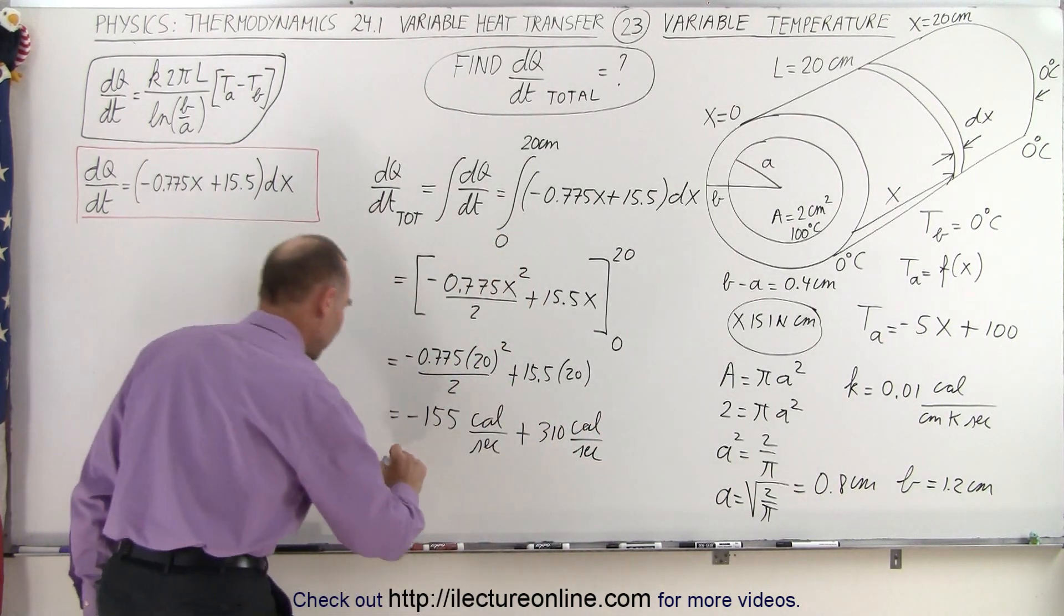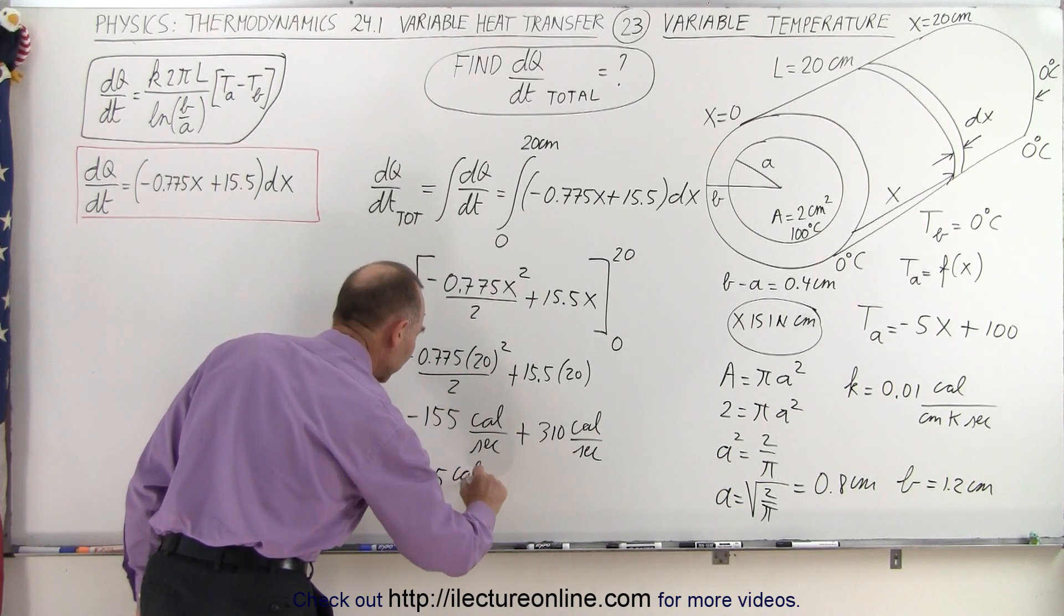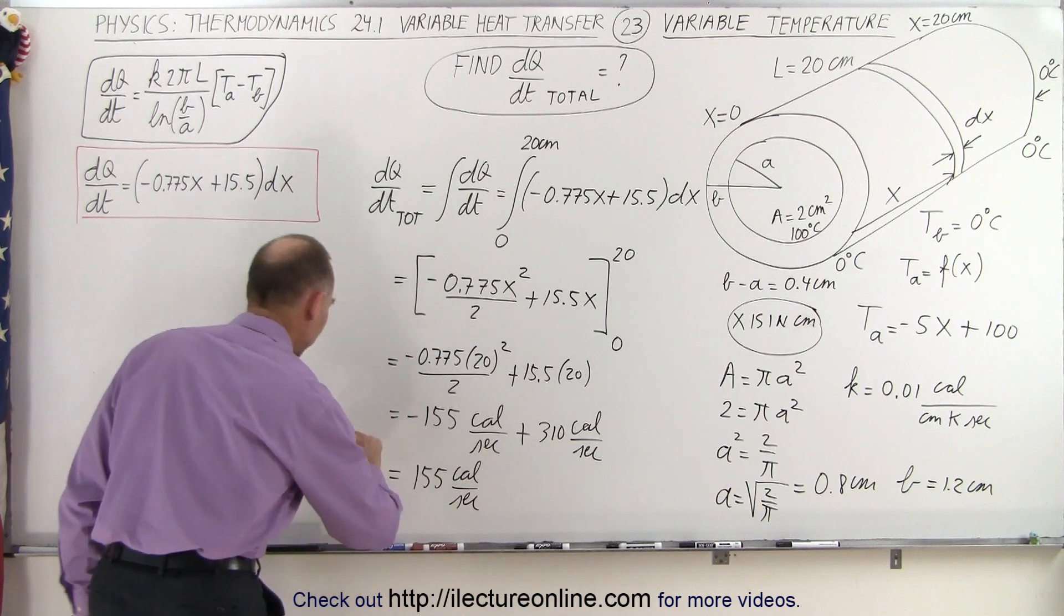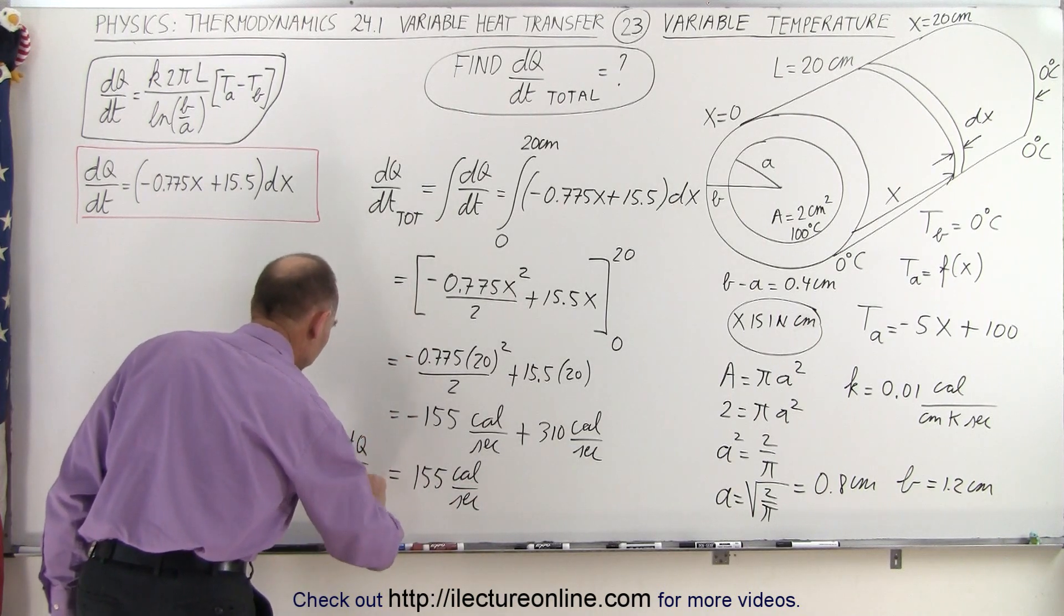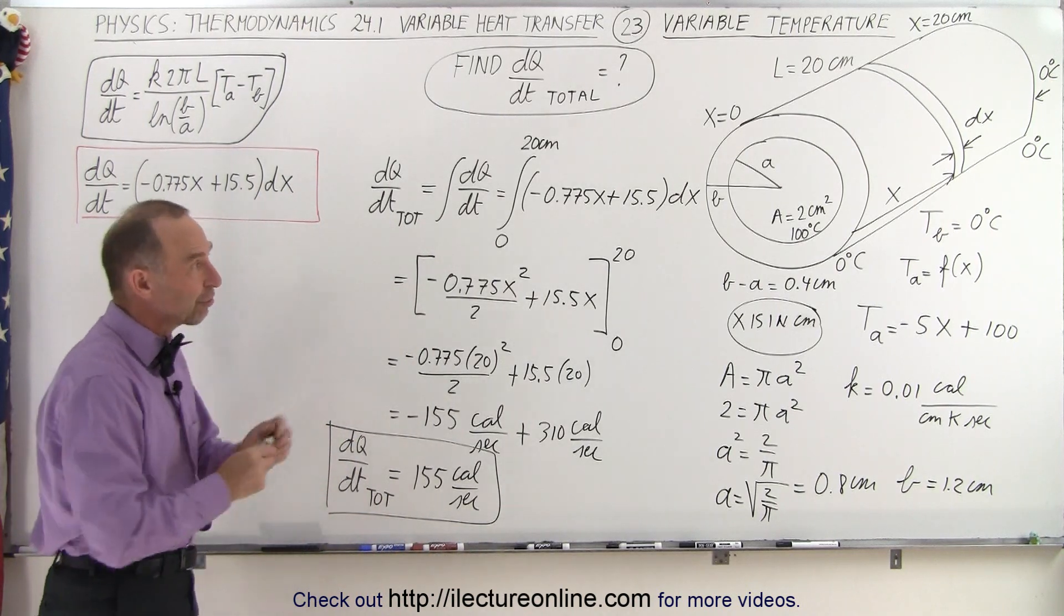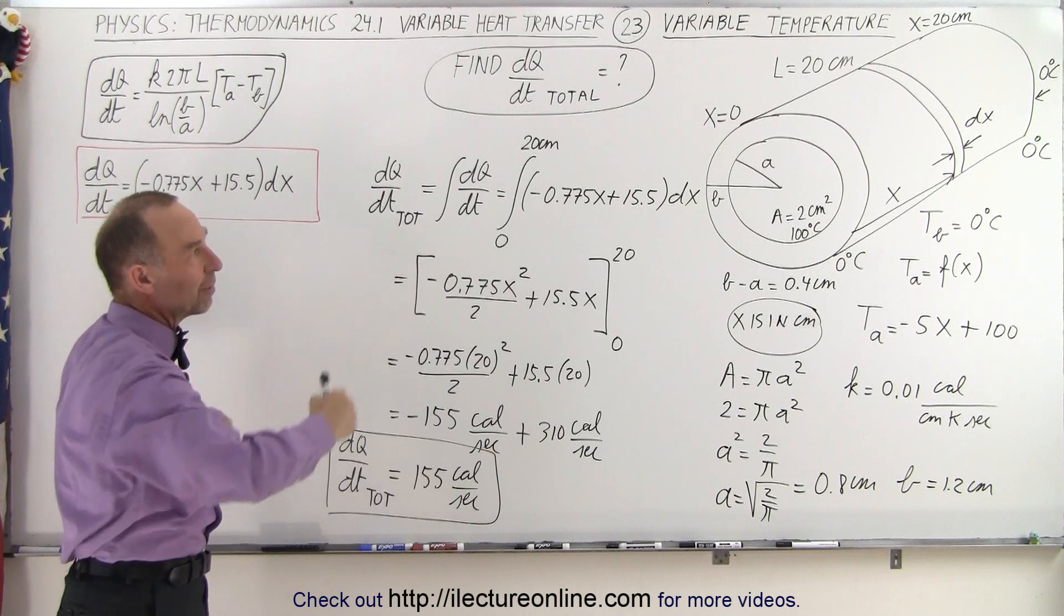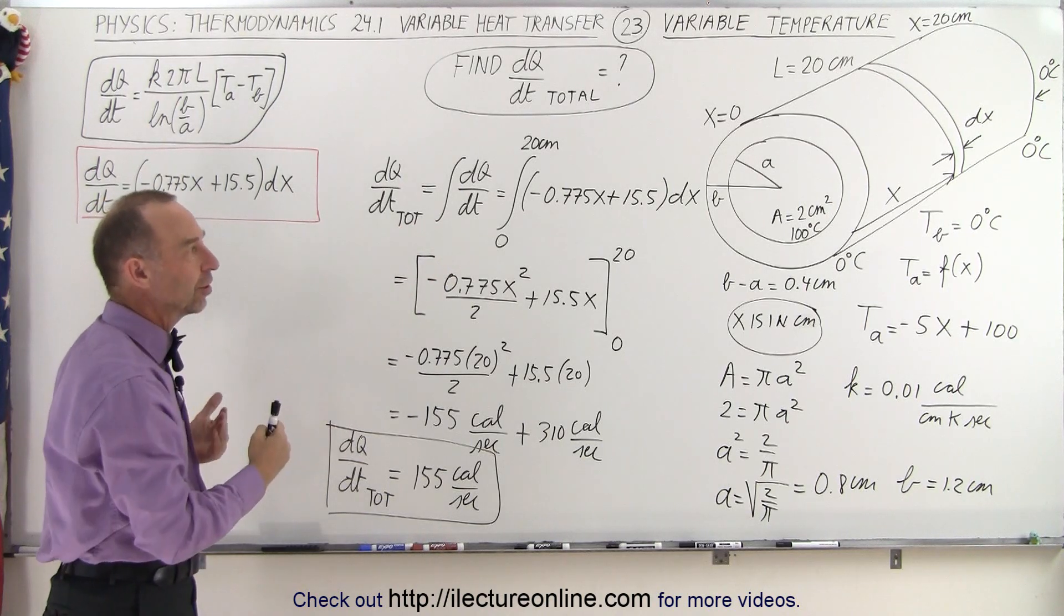So when we subtract one from the other, that is equal to a positive 155 calories per second, and that's the dQ/dt total, which means the complete heat transfer from the inside to the outside of that cylinder for the entire length of 20 centimeters.